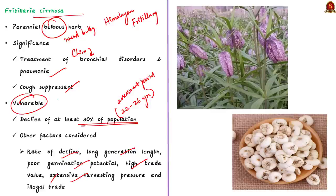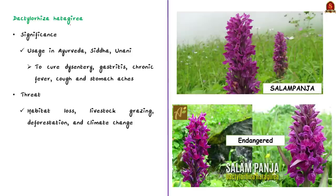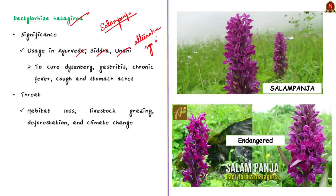The third species is Dactylorhiza hatagirea, known as Salampanja. It is extensively used in Ayurveda, Siddha, Unani and other alternative systems of medicine to cure dysentery, gastritis, chronic fever, cough, and stomach aches. The species is threatened by habitat loss, livestock grazing, deforestation, and climate change, which is why it is listed as endangered under the IUCN Red List.